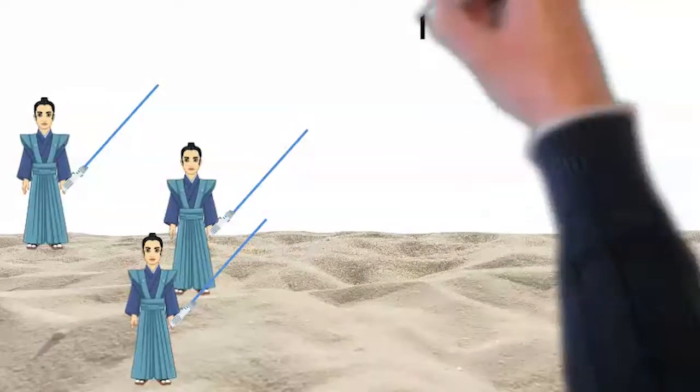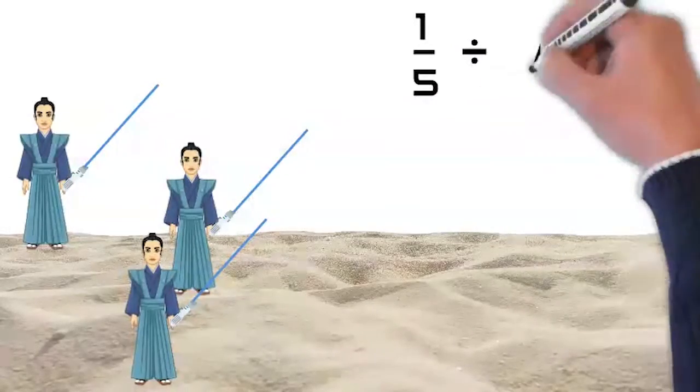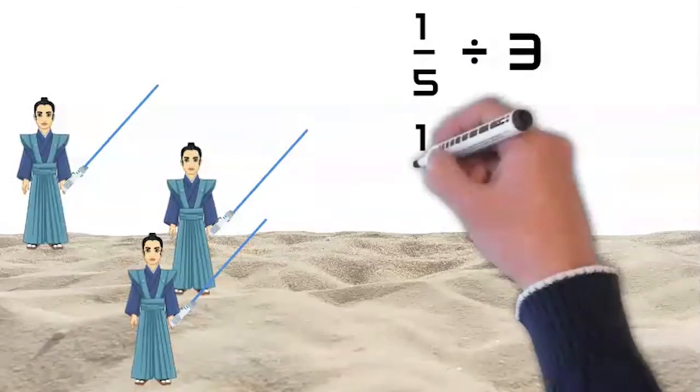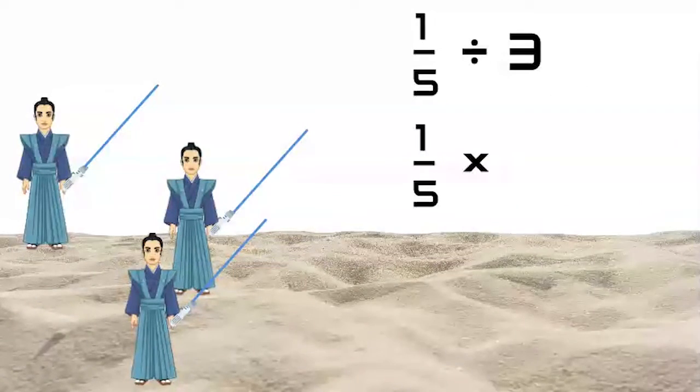Let's write the division problem. One-fifth divided by three. First, we will rewrite this as a multiplication by the inverse of the divisor. So we have one-fifth times one-third.